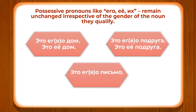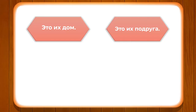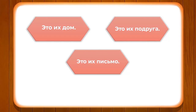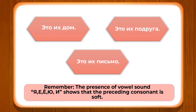ETA YIVO PADRUGA — this is his female friend. ETA IYO PADRUGA — this is her female friend. ETA YIVO PISMO — this is his letter. You can see how YIVO and IYO remain unchanged, however the nouns whether masculine or feminine remain in their base form.